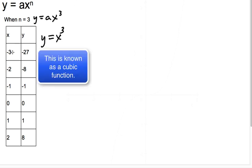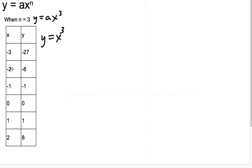I plug in negative 3 for x, I get negative 27. Negative 2 for x, I get negative 8, and I move on down the line. So you can kind of see values get negative, then they get positive again. But is it going to look like a quadratic?